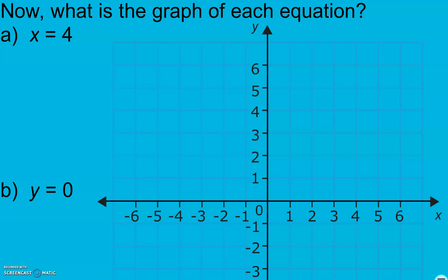Continuing on in section 5.5, what is the graph of each function? So in A, we have x equals 4. Here x equals 4, there's my intercept. Now if we think about this, it's going to be a vertical line because it's an x equals line.